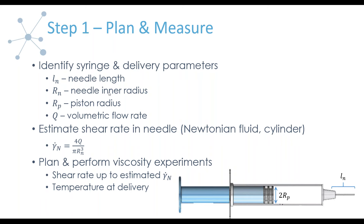In addition, you want to know the needle gauge, which gives you the inner radius of the needle, the radius of the piston or barrel, and the volumetric flow rate — how rapidly you want to deliver a particular volume of your product. Using these, to prep for your experiments, you'd want to estimate what the shear rate in the needle would be. Going in without any knowledge of how samples behave, you use the Newtonian expression for flow in a cylinder, which will give you a good gauge for a measurement range. The shear rate at the wall in the needle depends on the volumetric flow rate and the inner radius. Ideally, you would then measure viscosity as a function of shear rate up to and maybe slightly beyond this predicted shear rate.